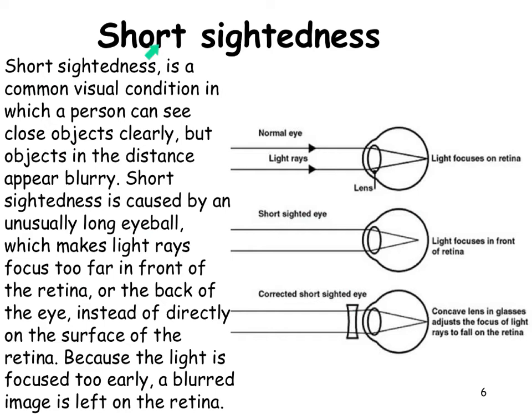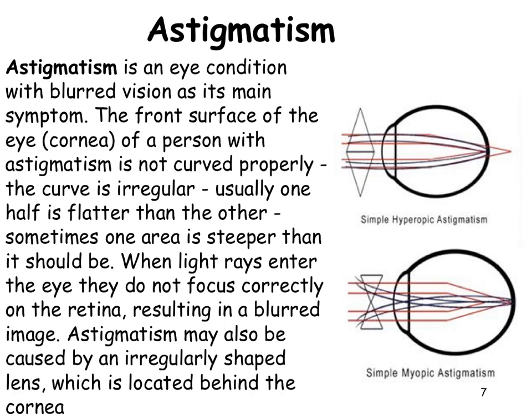Interestingly, short-sightedness is caused by a long eyeball, while long-sightedness is caused by a short eyeball. The relevant length is the distance from the lens to the back of the retina.